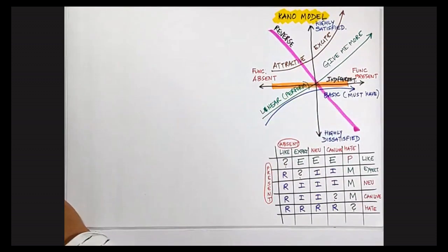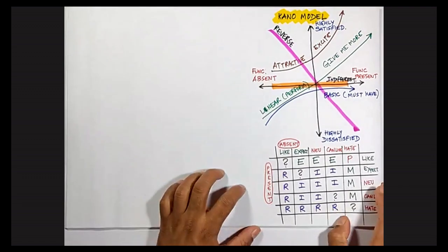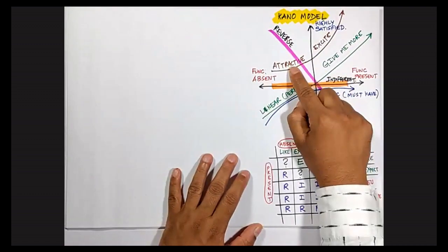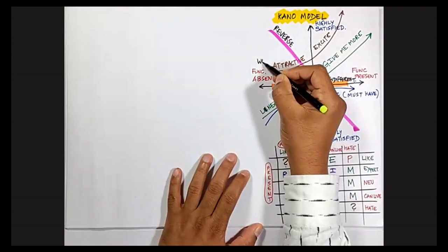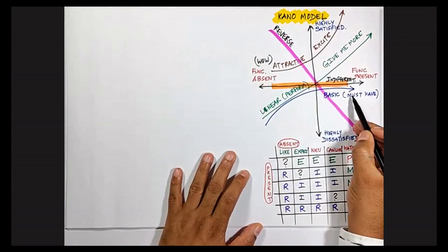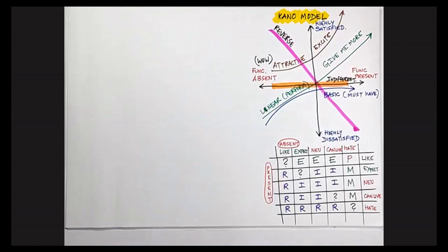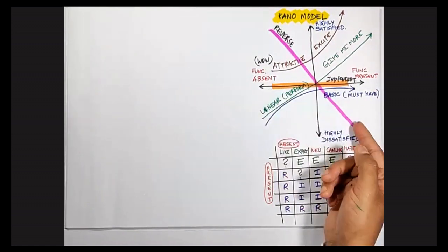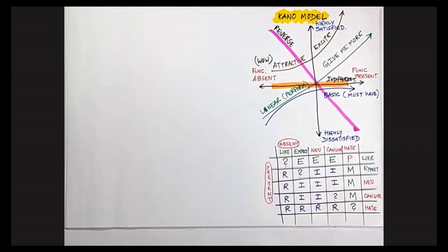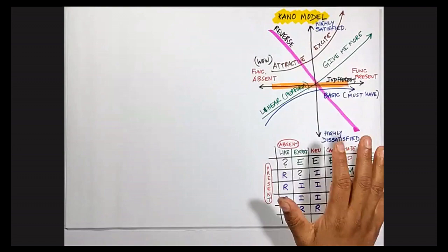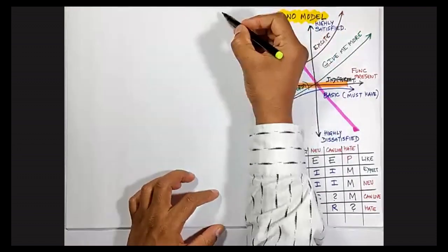Now let's look at what we have with all these categories: reverse means 'give me less,' performance means 'give me more,' exciters are 'wow I love this,' basic means 'don't even talk to me if this is not there,' and indifferent means 'I don't care.' If you remove indifferent features, customers feel no emotional difference at all. This model is called the Kano model, and it is a very important prioritization technique.